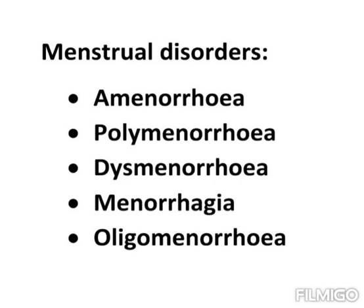The fourth type of menstrual disorder is menorrhagia. Heavy and prolonged menstrual period that disturbs a woman's normal activity is referred to as menorrhagia. The bleeding will be heavy and the menstrual period days will be prolonged.